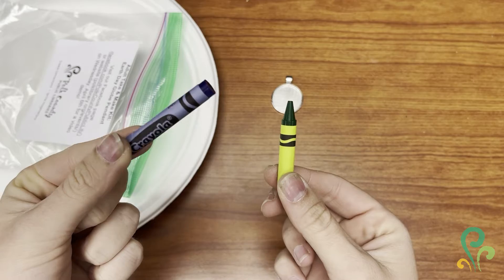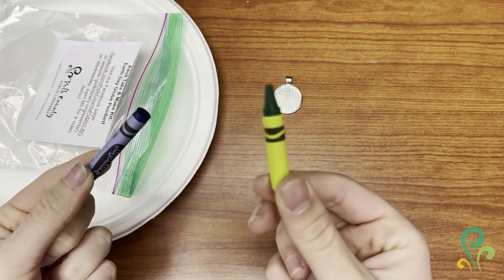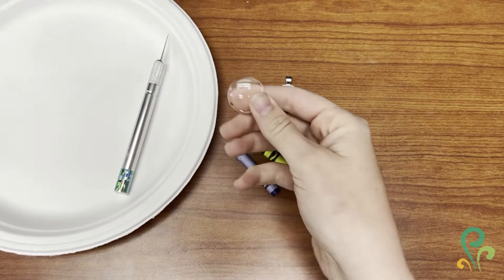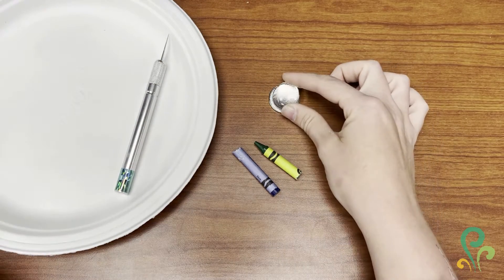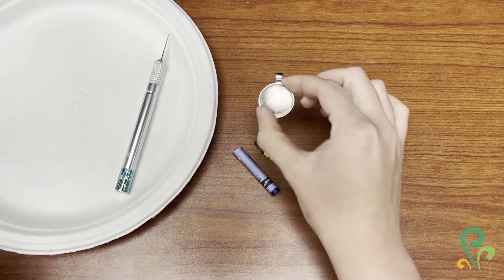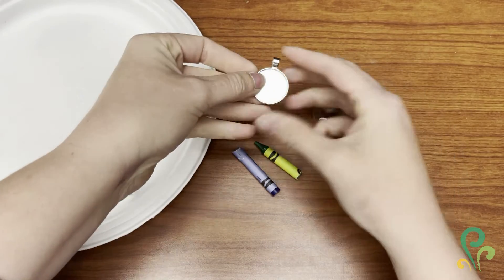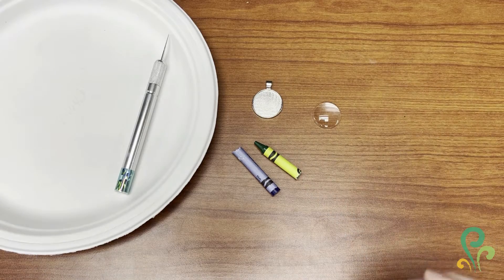You also have a clear disc that we're going to use to finish off your necklace at the very end and it fits just right inside. But for right now we'll take it out and just lay it over to the side.